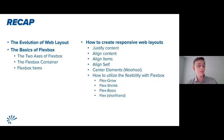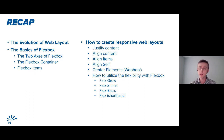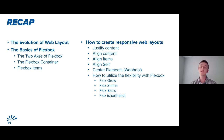To recap: we talked about the evolution of web layout and how we got to this point, the technological advancements that were made and their drawbacks. Then we looked at the basics of Flexbox — how to read the two axes, and how flex container and flex items work in tandem. We looked at how to create responsive web layouts using justify-content, align-content, align-items, and align-self. And we finished by exploring the flexibility of Flexbox with flex-grow, flex-shrink, flex-basis, and the flex shorthand.